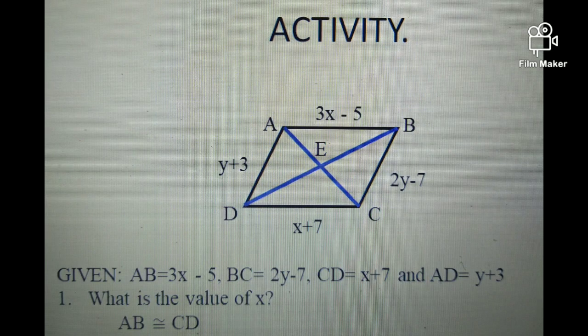Let's first plot the given values on the figure above. So now, what property will we apply here? This is property number 1, wherein opposite sides of a parallelogram are congruent. The opposite side of AB is side CD. So AB is congruent to CD, meaning they have equal measure.